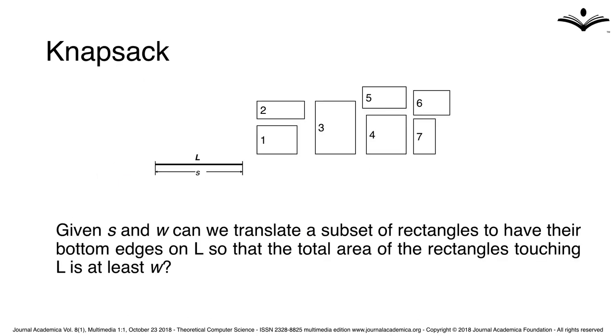Given S and W, can we translate a subset of rectangles to have their bottom edges on L so that the total area of the rectangles touching L is at least W?